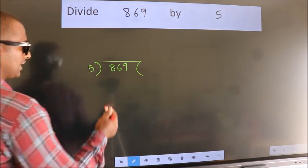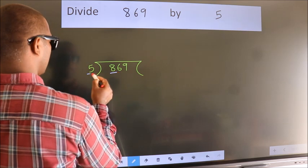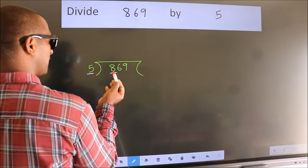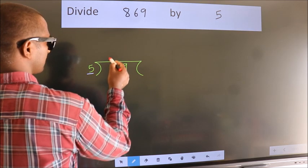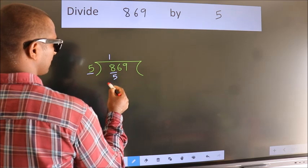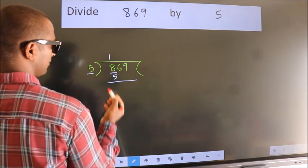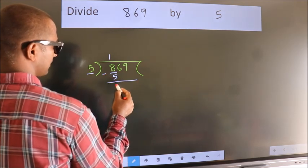Next, here we have 8, here 5. A number close to 8 in the 5 table is 5 times 1 is 5. Now we should subtract. We get 3.